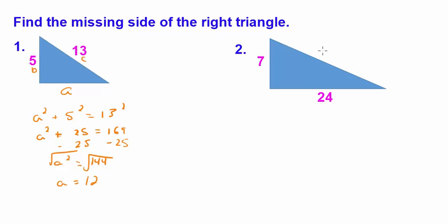Problem number two, we have both the legs, A and B. And again, it doesn't really matter which one you label as A or B. But you are missing the hypotenuse C. So you have 7 squared plus 24 squared is equal to C squared. 7 squared is 49. 24 squared is equal to 576, which is equal to C squared. Then you take the sum of these two and you have 625 is equal to C squared. And you do square root both sides. And so C is equal to 25.